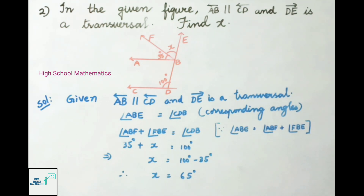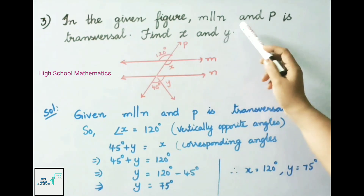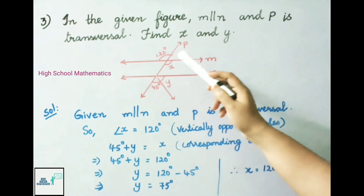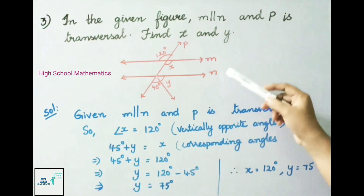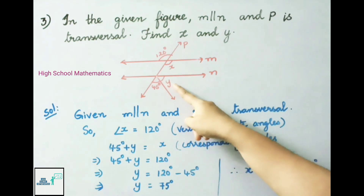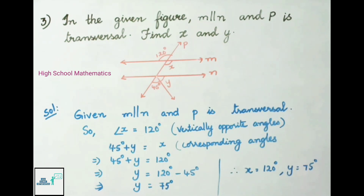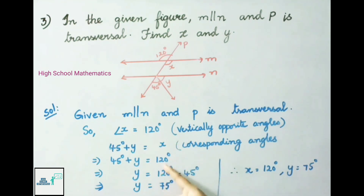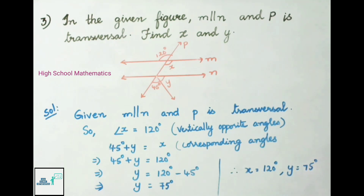Therefore X equals 65 degrees. Question number 3: In the given figure M is parallel to N and P is a transversal. Find X and Y. Given M is parallel to N and P is a transversal. Angle X equals 120 degrees because these both are vertically opposite angles. Next, X and 45 degrees plus Y are equal because these both are corresponding angles. So 45 degrees plus Y equals 120 degrees. Transposing: Y equals 120 minus 45 equals 75 degrees. Therefore X equals 120 degrees and Y equals 75 degrees.